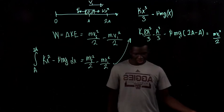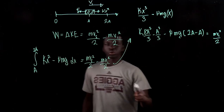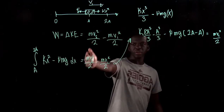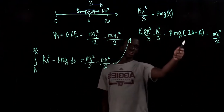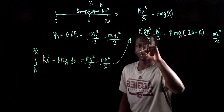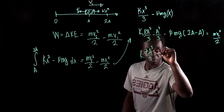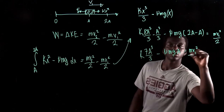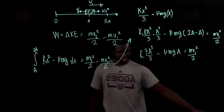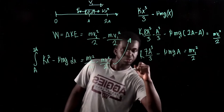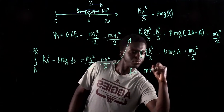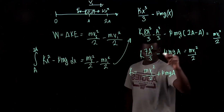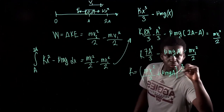We're trying to find the velocity 2v1. The final velocity is plugged in, and the initial velocity is zero, so we're left with mvf²/2. Simplifying, we get k(7a³/3) minus μmga equal to mv1²/2. We're trying to find k, so let's move everything to the right and divide. The answer is k equals [mv1²/2 plus μmga] times 3/(7a³).